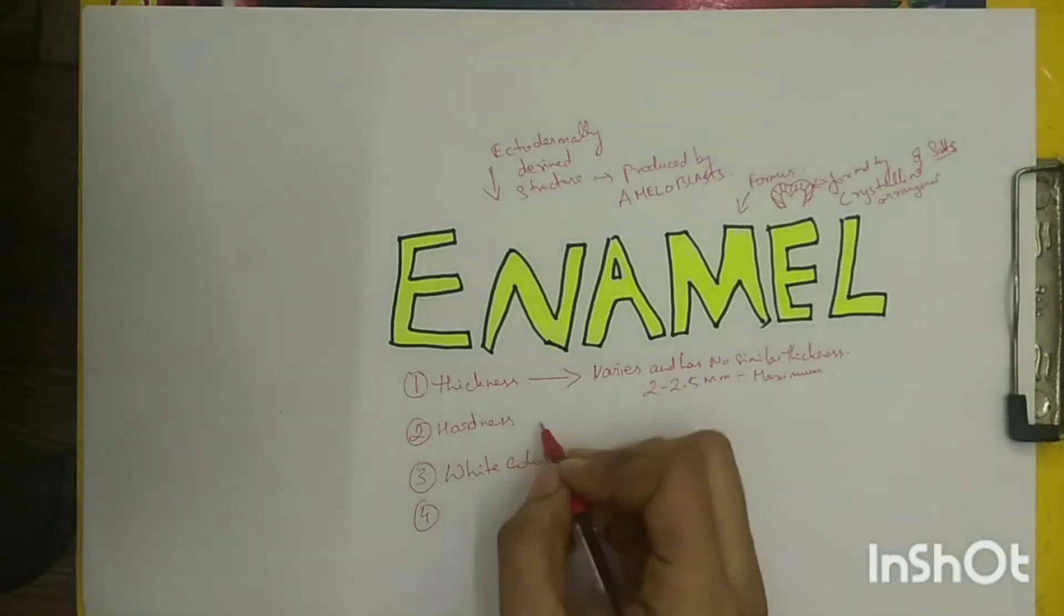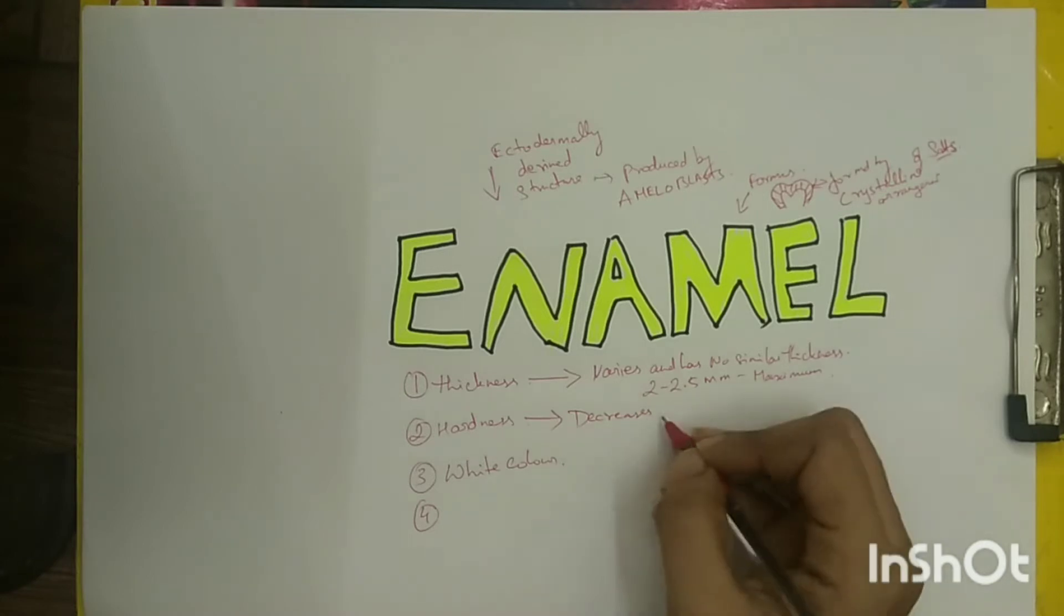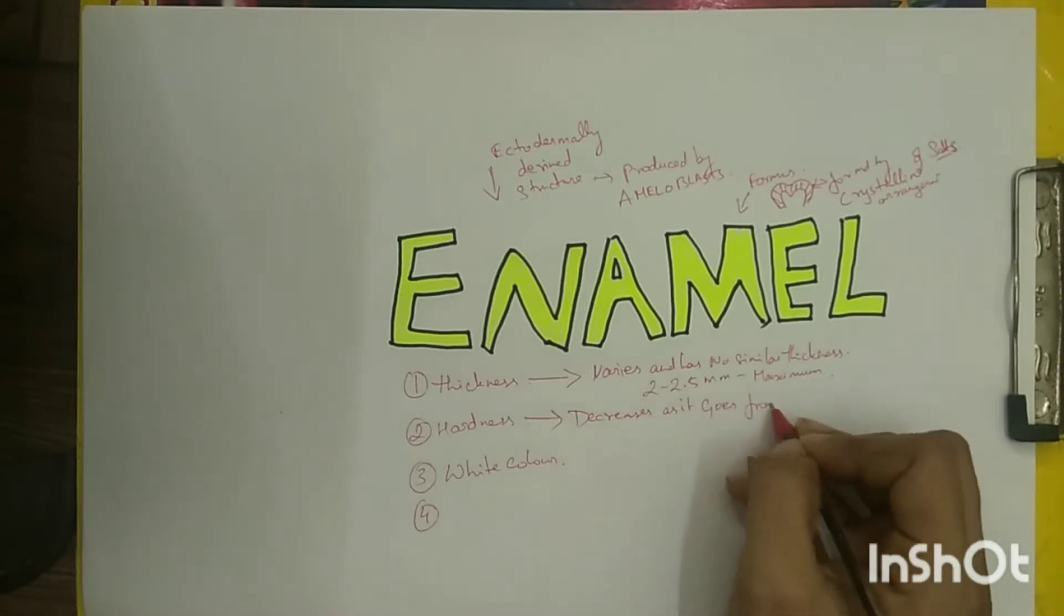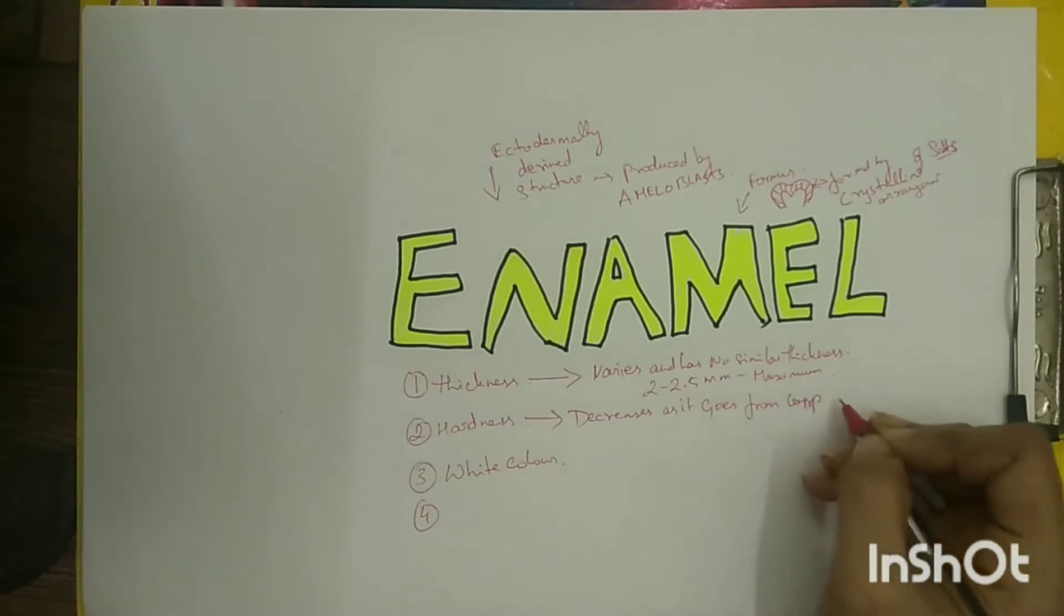Hardness and density of enamel varies in different parts of the crown. The hardness and density decreases from the surface of the enamel to the dentino-enamel junction and from the cuspal or incisal region to the cervical margin.